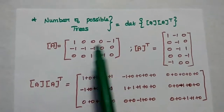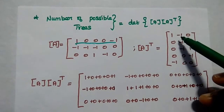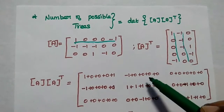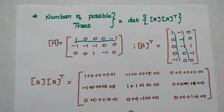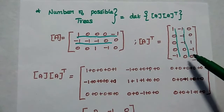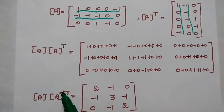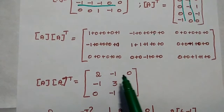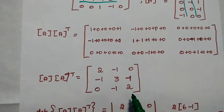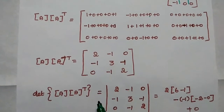We multiply the two matrices: each row of A is multiplied with each column of the transpose. The first row multiplied with the first, second, and third columns gives the first row of the result. Similarly for the second and third rows. Finally, we get the resulting matrix as: 2, minus 1, 0 in the first row; minus 1, 3, minus 1 in the second row; and 0, minus 1, 2 in the third row.